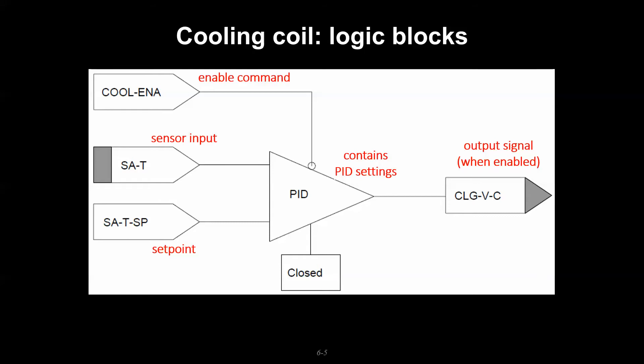Here we have some enable command because we may not want that PID loop to operate at all times. When we're not operating that PID loop, say when we're unoccupied, we're going to tell the valve command what we want it to be - say closed.